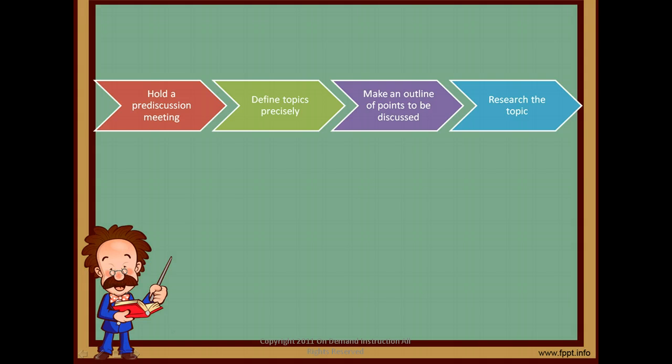A good group discussion is carefully planned. Let's look at a good planning process. First, hold a pre-discussion meeting to determine the discussion topic. Make sure it is timely and interesting. Next, define the topic precisely. After defining, phrase the topics into questions rather than a statement. Then, make an outline of points to be discussed. You may include problems, solutions, issues, and possible actions. After this, research the topic by reading, collecting data, and as much information as possible before the discussion.